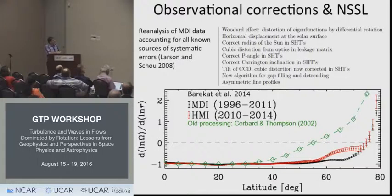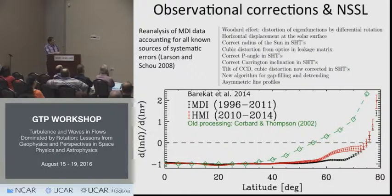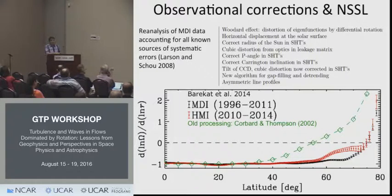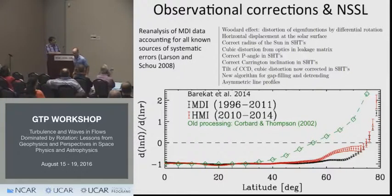What we find is that the logarithmic gradient of rotation — d ln(ω) / d ln(r) — which is unitless, is very close to minus 1, and unlike previous measurements it is really flat up to 60 degrees latitude. Above that we are not entirely sure, because the MDI and HMI observations are not quite consistent. I would say there is really no evidence of a switch of sign in this radial gradient of rotation.